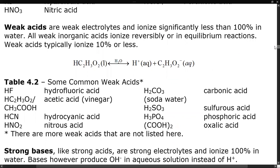Weak acids usually ionize 10% or less, like acetic acid, which ionizes to form H+ and the acetate ion. The weak acid list is much more extensive than the strong acid list. If you know the strong list, anything not on it is weak. Common weak acids include hydrofluoric acid, acetic acid (vinegar), hydrocyanic acid, nitrous acid, carbonic acid, sulfurous acid, phosphoric acid, oxalic acid, and the list continues.